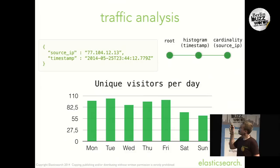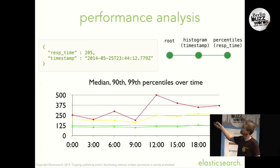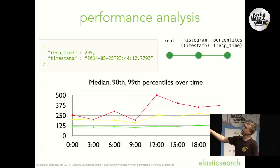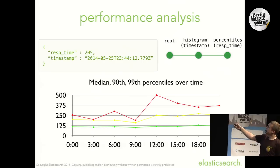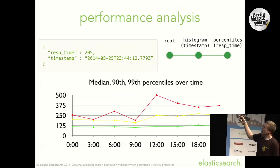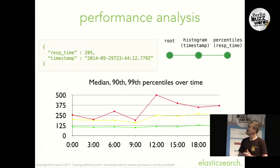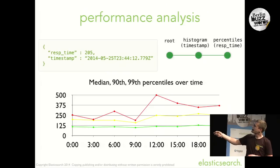You do not need to put a cardinality aggregation under a histogram — you could put something else. For performance analysis, imagine you are logging performance data of your application into Elasticsearch. Documents would typically have a response time and a timestamp. If you put a percentile aggregation under a histogram aggregation with an interval of three hours, you would be able to get the median, 90th, and 99th percentiles of your application's response time for every three-hour bucket.